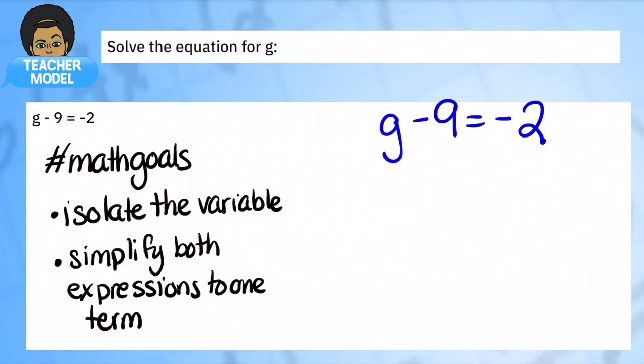We want this number by itself. Unfortunately, that number is being reduced by 9. So what we're going to do is the opposite. Instead of subtracting 9, what we want to do is add 9. And what this will do is it will cancel out these negative 9 and positive 9. Why? Because they create a zero pair. I'm adding two opposite numbers. I create zero, which leaves me with only the variable g.